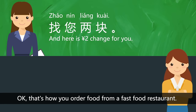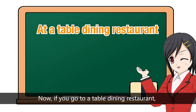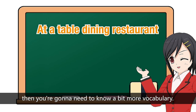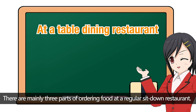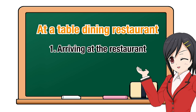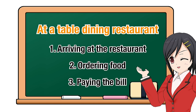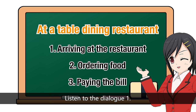That's how you order food from a fast food restaurant. Now, if you go to a table dining restaurant, then you're going to need to know a bit more vocabulary — it's a little bit more complicated. There are three parts of ordering food at a regular sit-down restaurant: arriving at a restaurant, ordering food, and paying the bill. Listen to the dialogue.